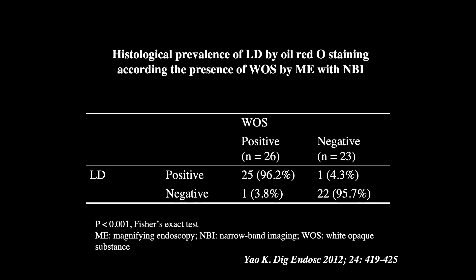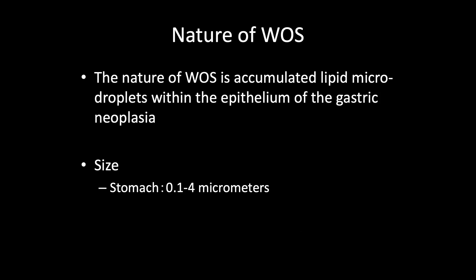As shown in this slide, White Opaque Substance is closely correlated with lipid droplets. The nature of White Opaque Substance is accumulated micro-lipid droplets within the epithelium of gastric neoplasia. In another report, we reported the size of the droplets is 0.124 µm.